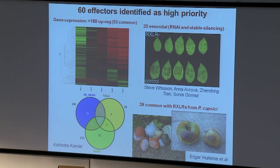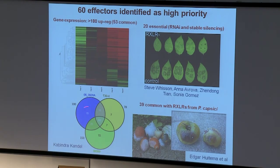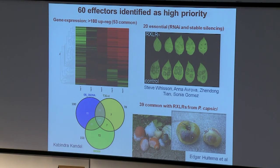That large number needed to be whittled down. We've spent a lot of time trying to home in on a set of effectors to characterize in more detail. We've looked at their transcriptional upregulation during infection — shown in red here — many of them are upregulated in the first two days of infection. Down here we have a Venn diagram of the RxLRs expressed in different genotypes of P. infestans. There is a core set of genes expressed in all cases, which is work ongoing with Kabindra Kandell who has a poster here.